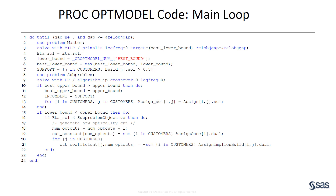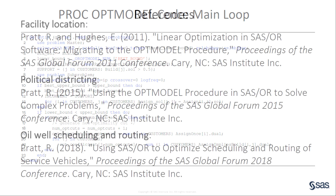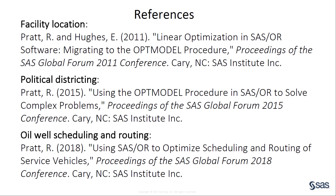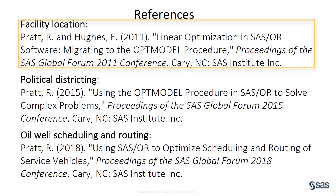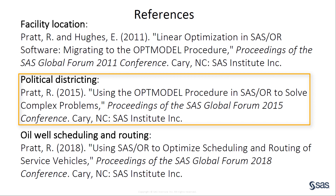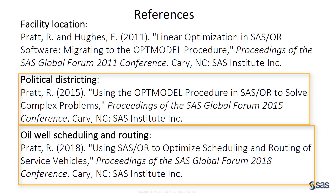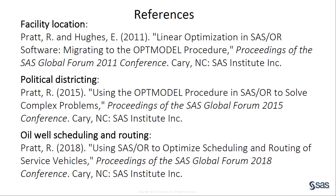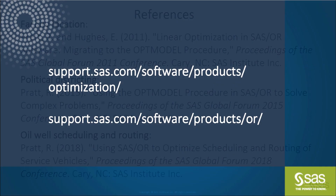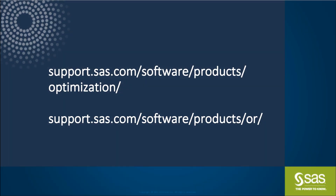Although this approach is more complicated than just calling the MILP solver once, Bender's decomposition exploits problem structure and can reduce the amount of memory needed to solve large problems. For more details, including all of the code needed to solve another facility location variant, see the SAS Global Forum 2011 paper listed here. The other two papers cover the political districting problem and oil well scheduling and routing problem mentioned earlier. All three examples illustrate the use of multiple solvers within one PROC OPT MODEL session to implement a customized algorithm. This concludes the video. I hope you find these examples useful when you encounter difficult optimization problems. For more information, please visit support.sas.com.